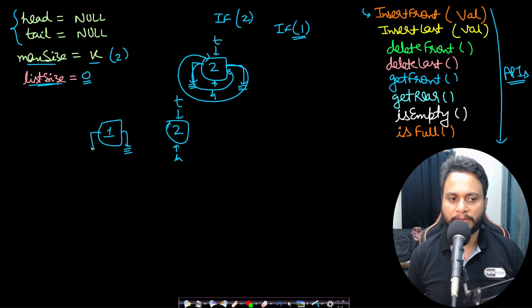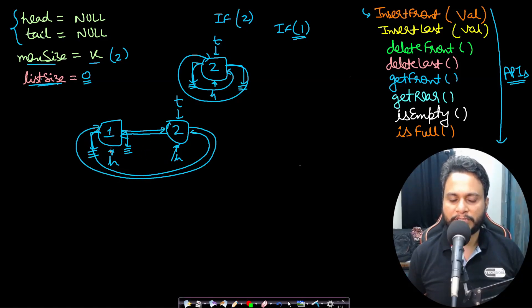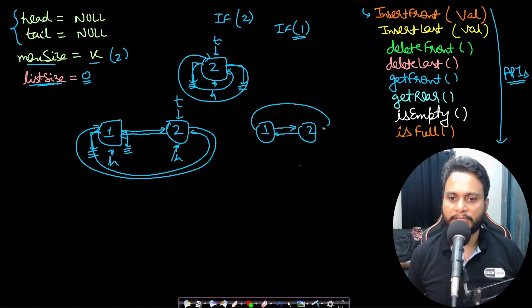Since we want to insert at the beginning, node 1 will be placed to the left of the head. So the new node's next pointer is set to head, and the head's previous pointer is set to the new node. Then head is updated to the new node, the head's previous is made to point to tail, and the tail's next is made to point to head. After inserting 1: node 1 points to 2, node 2 points back to 1, and node 2's next points back to 1, forming the circular structure.